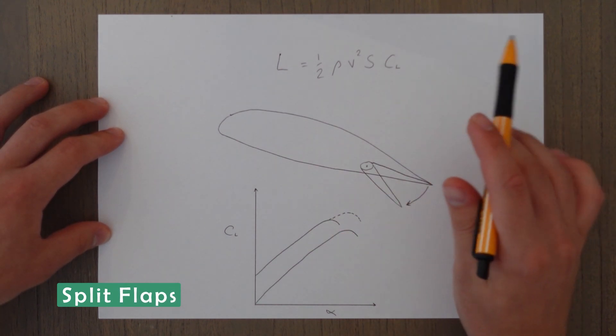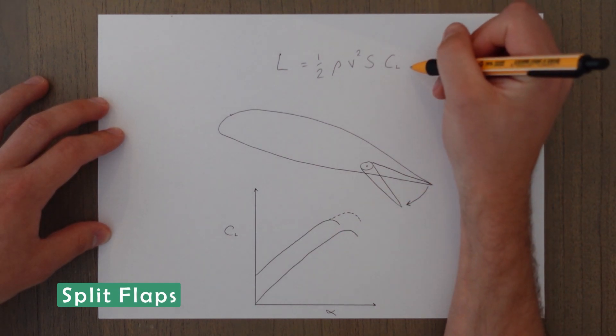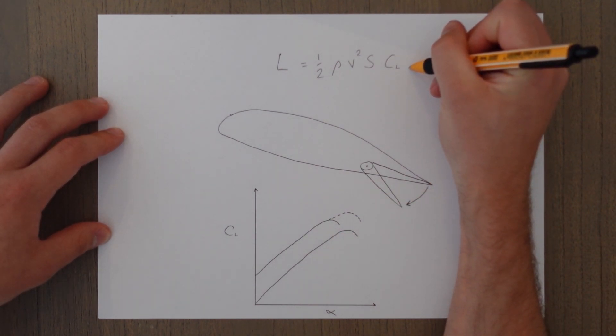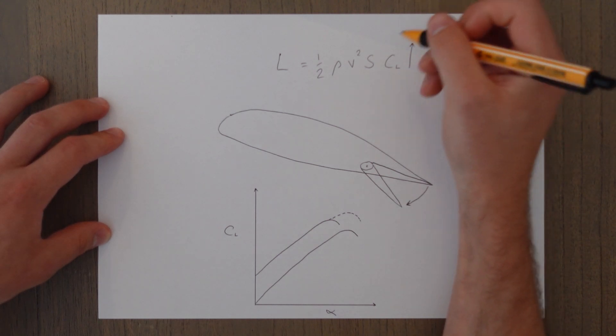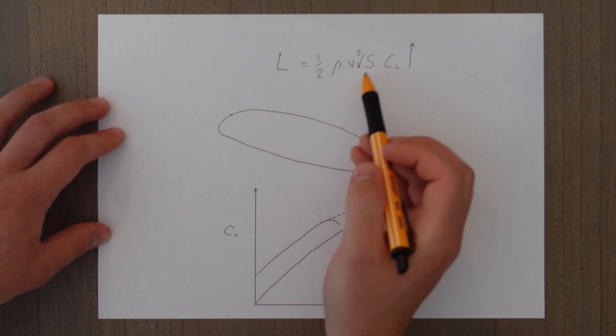All flaps work in essentially the same way. They increase the coefficient of lift to allow us to fly at a slower speed and maintain the correct amount of lift that we need for flight.